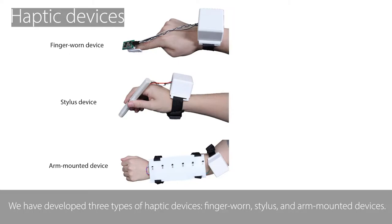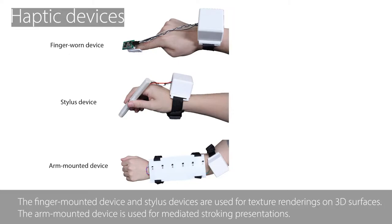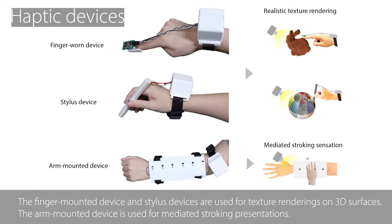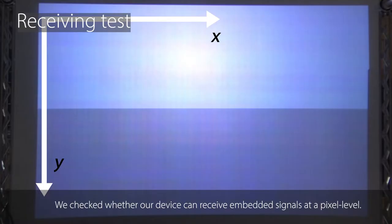We have developed three types of haptic devices: finger-worn, stylus, and arm-mounted devices. The finger-worn and stylus devices are used for texture rendering on 3D surfaces, while the arm-mounted device is used for mediated stroking presentations.